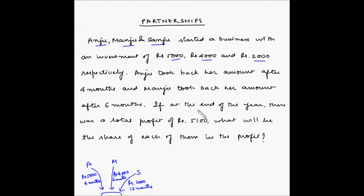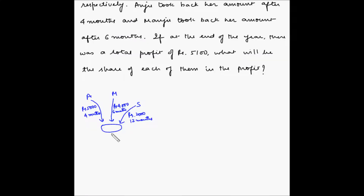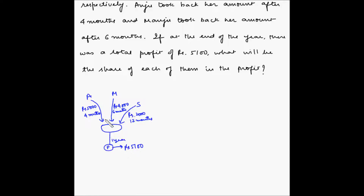Now, at the end of the year there was a total profit of rupees 5,100. We have to find out, out of this rupees 5,100, how much should be given to Anju, how much should be given to Manju and how much to Sanju.